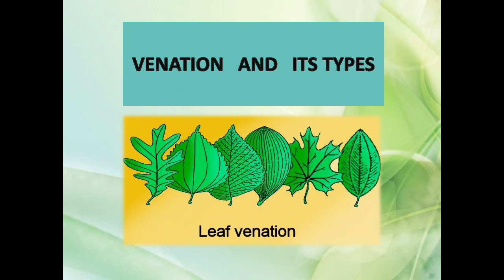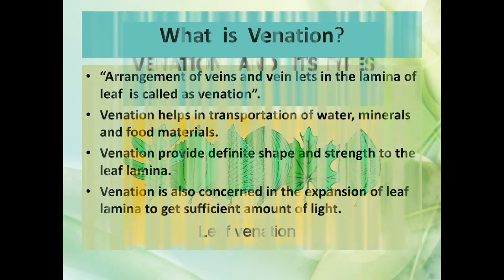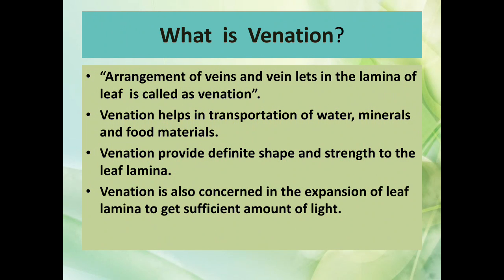What is venation? The arrangement of veins and veinlets in the lamina of a leaf is called venation. Venation helps in transportation of water, minerals, and food materials. Venation provides a definite shape and structure to the leaf lamina, and is also concerned in the expansion of leaf lamina to get a sufficient amount of light.